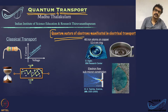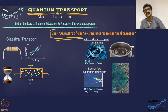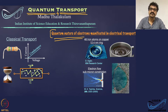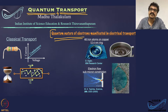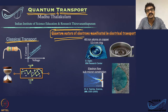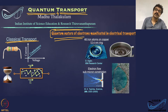You might ask: many of the properties used in transport, such as band gap and effective mass, are derived from the quantum mechanical nature of electrons. That is true, but those are material properties. When we say quantum transport, we observe the quantum nature of electrons directly, whereas classical transport still treats electrons as particles, even though their properties are derived from quantum mechanical principles.